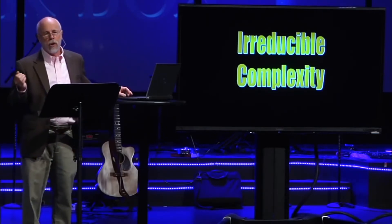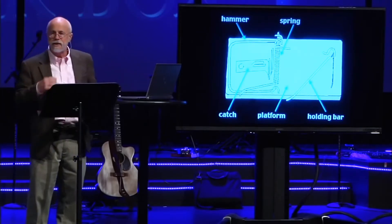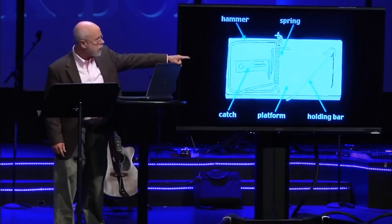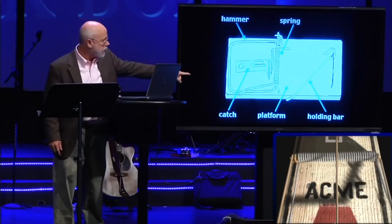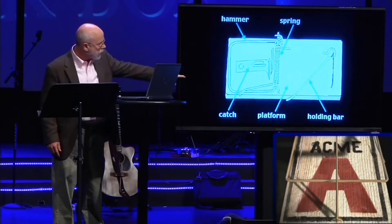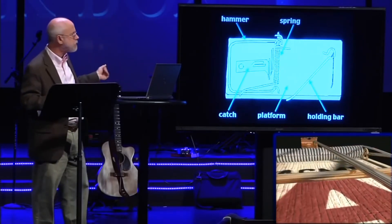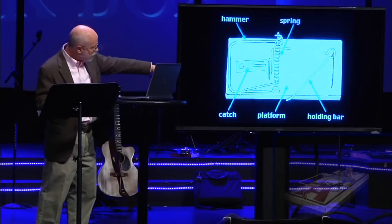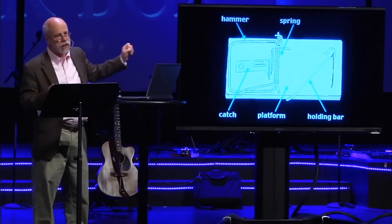An example of such a thing from our everyday world is a simple mechanical mousetrap — one you'd buy in a grocery store. A mousetrap has a number of different parts: it's got that tightly wound spring in the middle, whose top end presses against the wooden platform, and whose bottom end overlaps the hammer — the piece that actually squashes the mouse. When you push the hammer over, it's stabilized by the holding bar, which inserts into something called the catch.